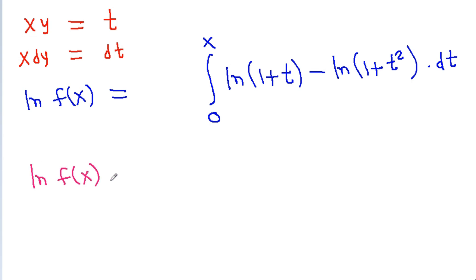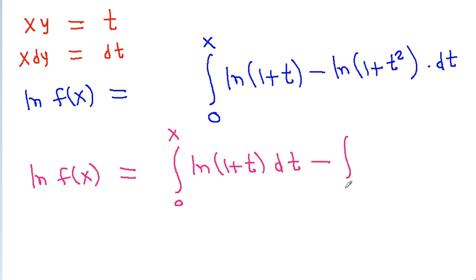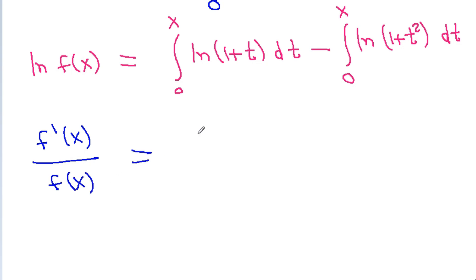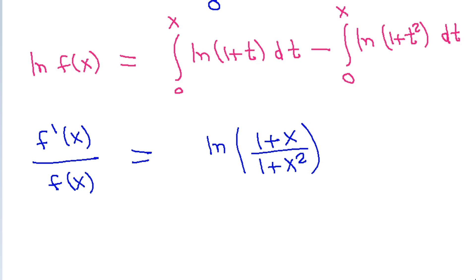After substitution, ln f(x) = ∫₀ˣ ln(1 + t²) × (1/x) × x dt, giving ln f(x) = ∫₀ˣ ln(1 + t) dt divided appropriately. Differentiating both sides with respect to x: f'(x)/f(x) = ln(1 + x) − ln(1 + x²) = ln((1 + x)/(1 + x²)).